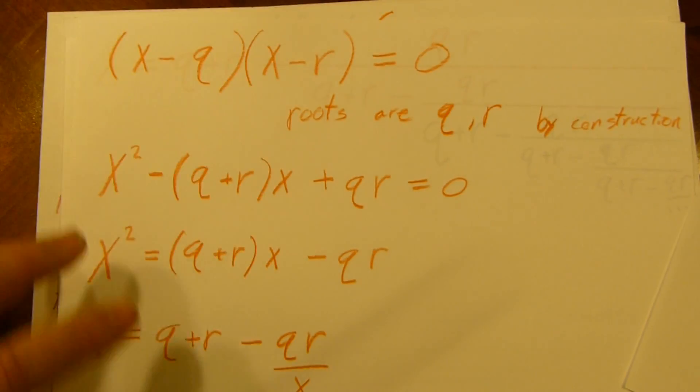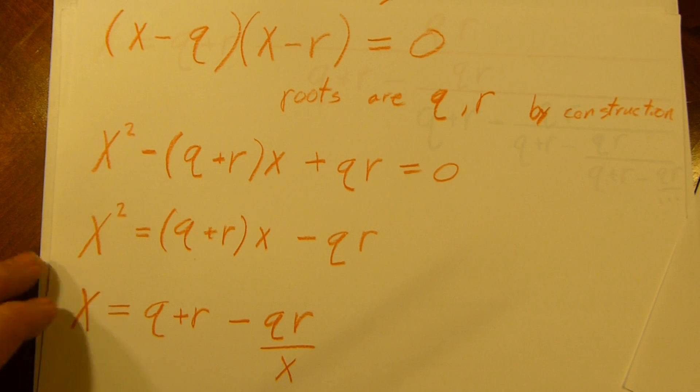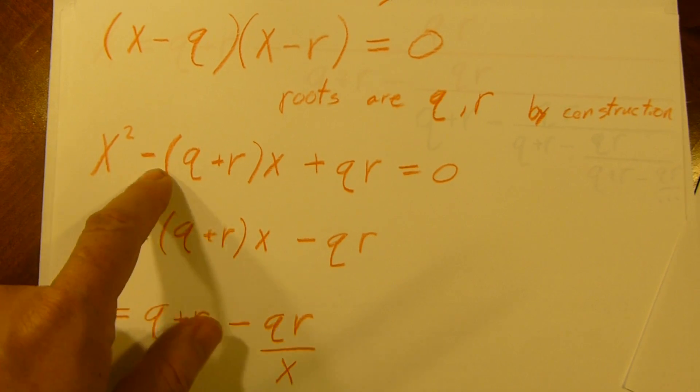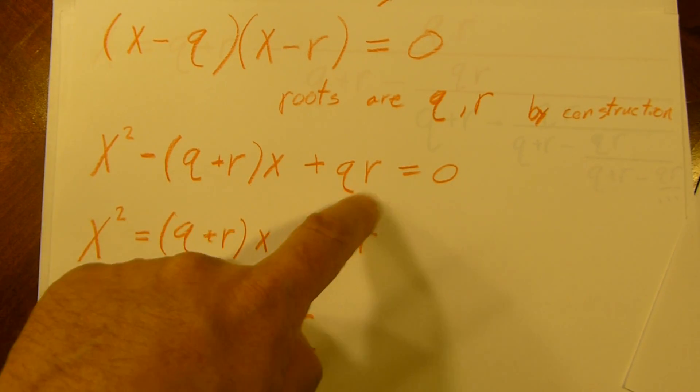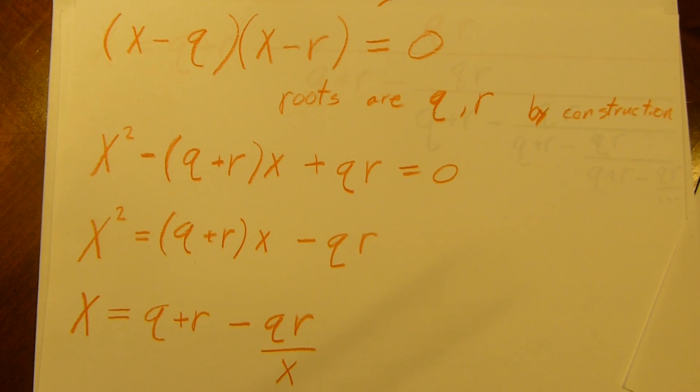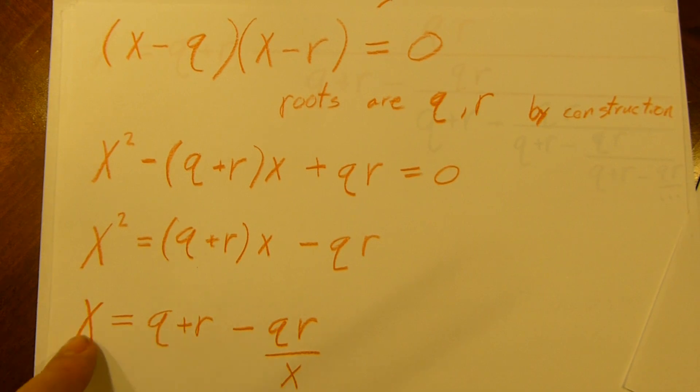Now let's do some calculating ourselves. See what we get. Let's start with (x - q)(x - r) equals 0. That's pretty straightforward. That can't possibly be weird. We know that roots are q and r by construction. This is no great stool stuff. Let's foil it. So we get x squared minus (q + r)x plus qr equals 0. Reasonable. Let's move the two rightmost terms to the right side. And then we divide both sides by x.